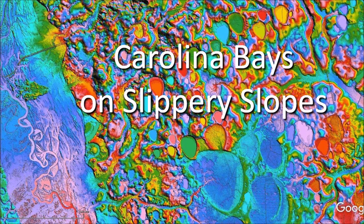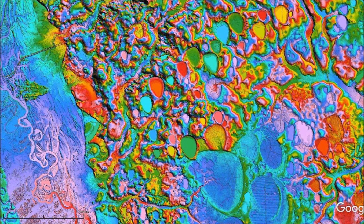Today I will analyze some deformed bays on the slippery slopes of South Carolina. Near the banks of the Savannah River, there are many Carolina bays that are not elliptical. They were distorted by viscous flow at the time of their formation by the sloping topography of the terrain.